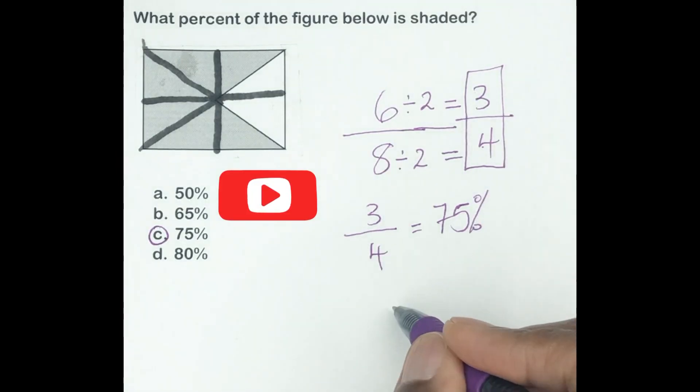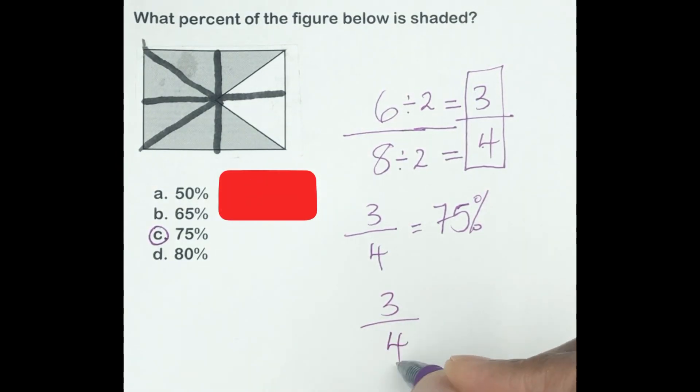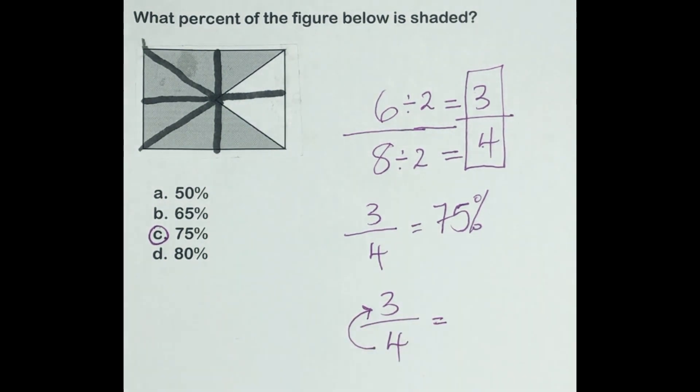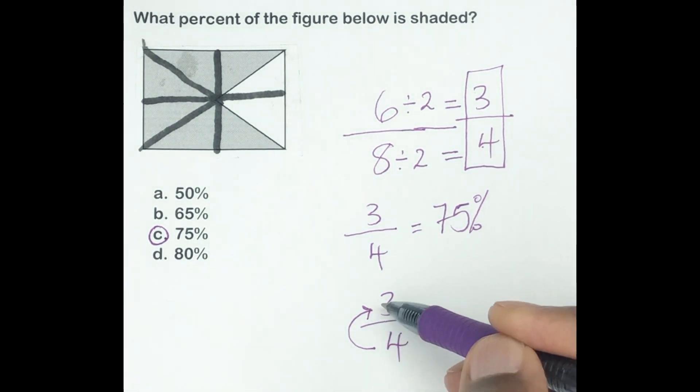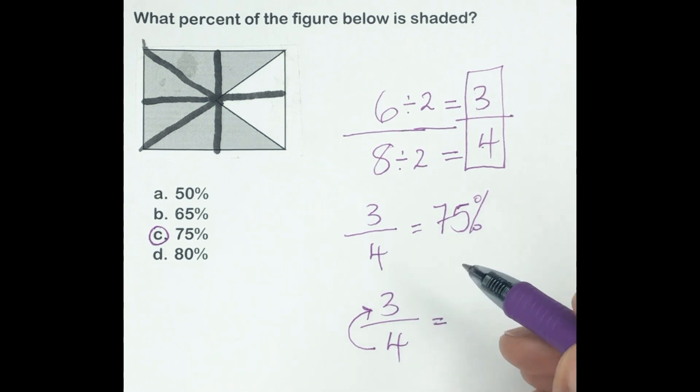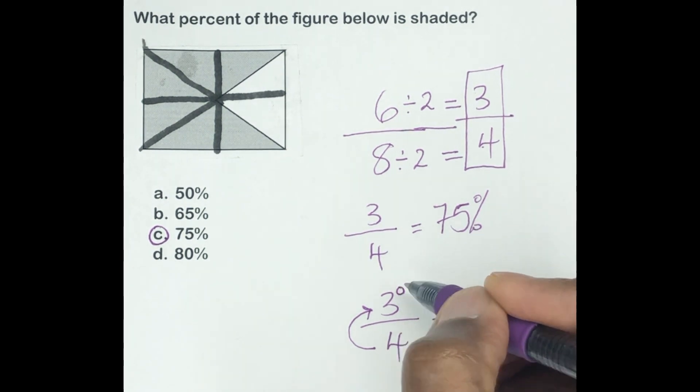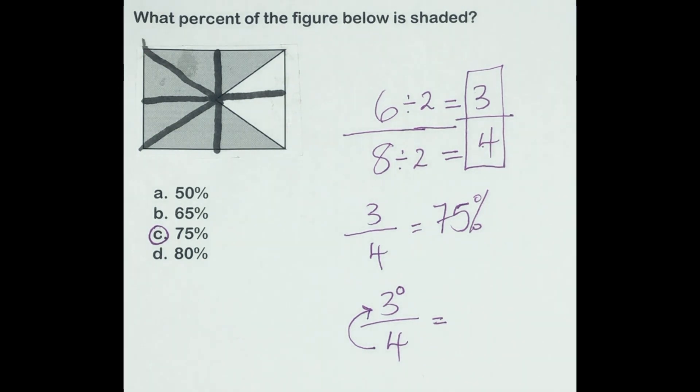So let me just prove my answer further. Can 4 go into 3? Yes or no? Okay, no. So then you put a zero on there. Now it's 30. How many times does 4 go into 30? You have to know your multiplication for this. So it's 7 times, because 7 times 4 is 28.